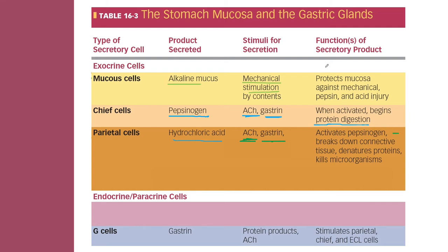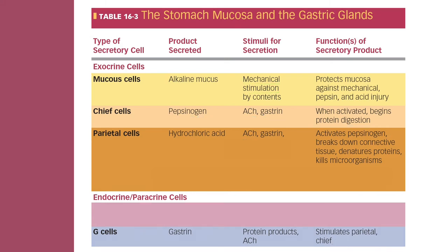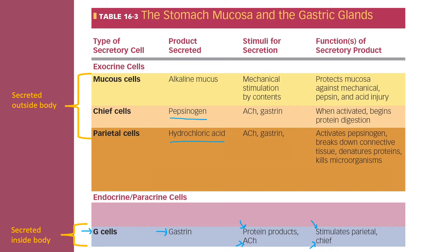These cells are labeled as endocrine and exocrine. Exocrine secretions occur outside the body — and remember, the lumen of the GI tract is technically outside the body, as it runs from the oral cavity opening to the anus. Endocrine secretions, by contrast, are secreted inside the body — gastrin is released and travels via the blood.